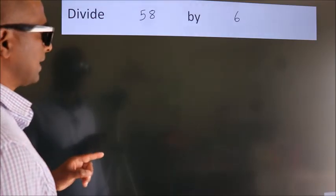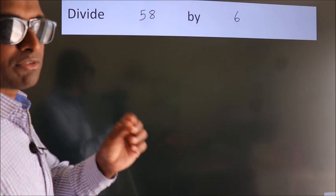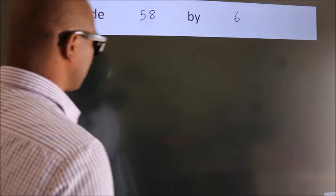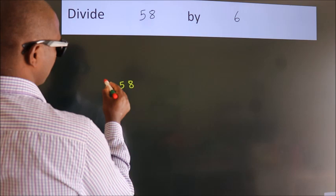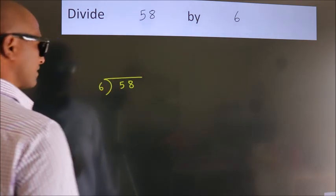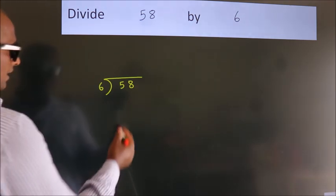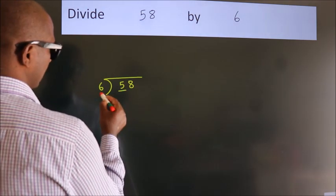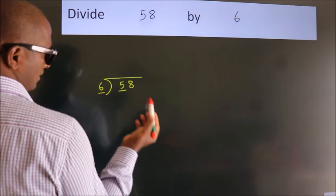Divide 58 by 6. To do this division, we should frame it in this way: 58 here, 6 here. This is your step 1. Next, here we have 5, here 6. 5 is smaller than 6, so we